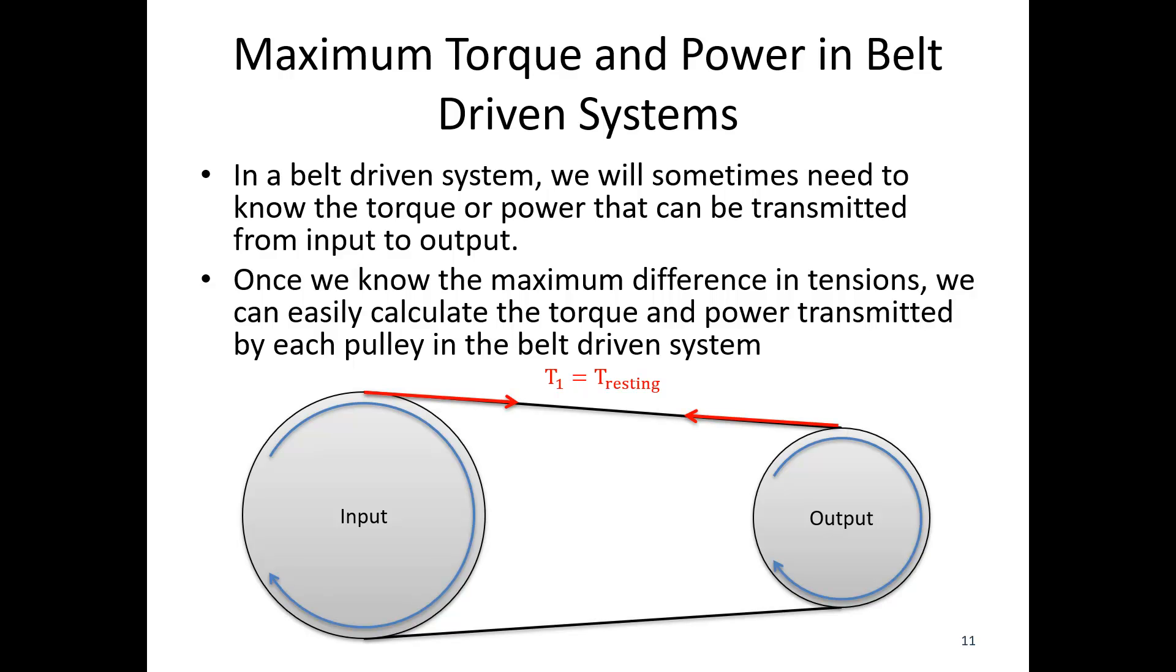Once we know the tension, we can figure out the torque or power transmitted in each pulley in a belt-driven system. T1 is always the resting tension - we measure when nothing is moving. One side always stays at that lower value. When transferring power, we have a moment at the input and resistance on the output, so T2 values get larger. The greater these moments, the greater the T2 value.